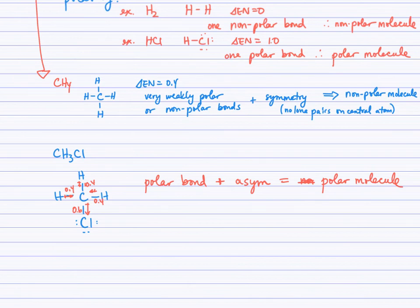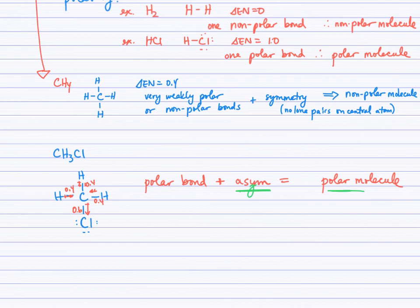The key with symmetry: when there are no lone pairs around the central atom, just check to see if all the bonded atoms are the same. If they're not, the molecule will be asymmetrical, leading to the conclusion that it is a polar molecule. Check out the PhET simulation — you'll notice bond dipoles or arrows being drawn.